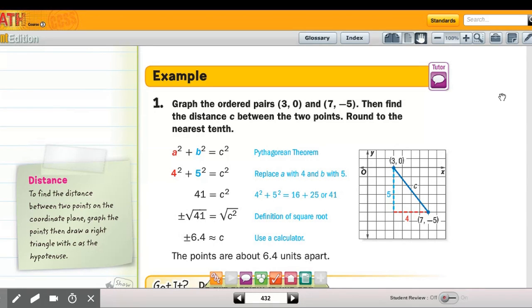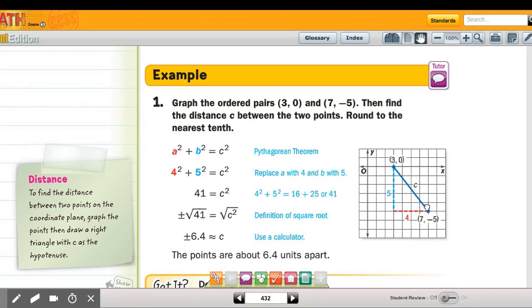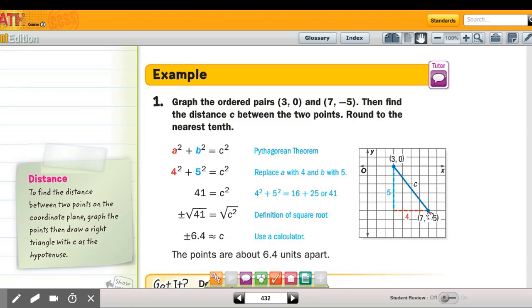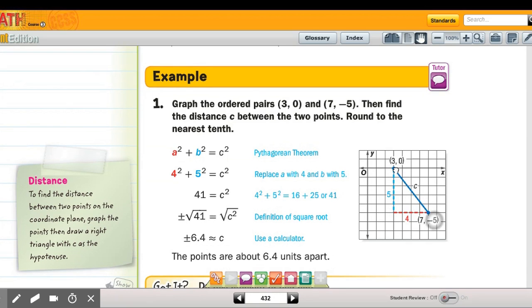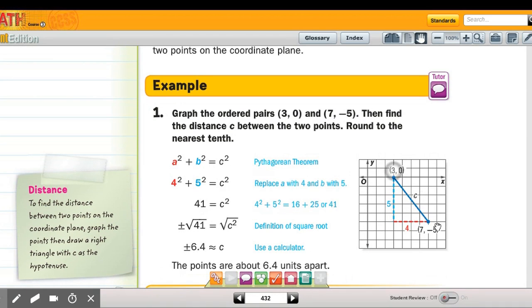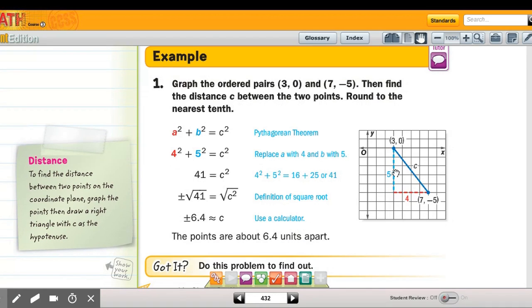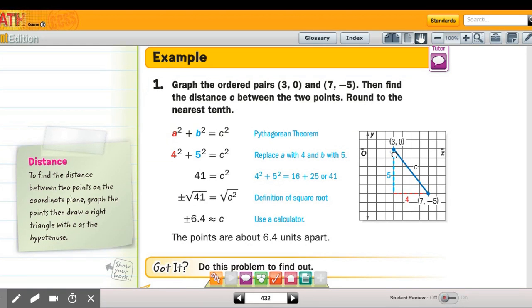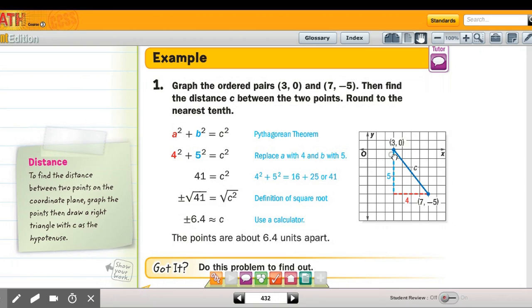So it's showing you how you can use the Pythagorean theorem to figure out the distance between any two points that are on a graph. Because you have a point here and a point here, and if you see what they did, they say well what's the distance between those two points? Well the distance between those two points would be doing the Pythagorean theorem because you have five going down, so from here to there is five, from here to there is four.